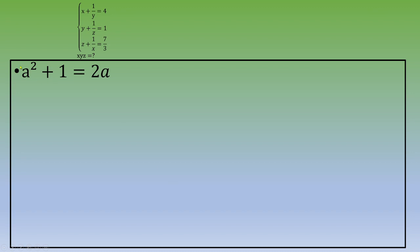So you need to solve this equation. If you put 2a on the left side of the equation, you will get a squared minus 2a plus 1 equals 0.